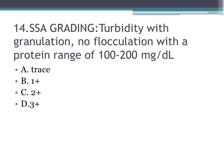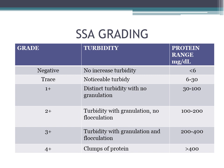Number fourteen: turbidity with granulation, no flocculation, protein range 100 to 200 mg/dL — A. trace, B. 1+, C. 2+, D. 3+. The correct answer is C, 2+. SSA grading: 3+ is turbidity with granulation and flocculation. 4+ is clumps of protein with a protein range greater than 400 mg/dL. Remember this SSA grading — it appears on the board exam. Note the protein ranges.